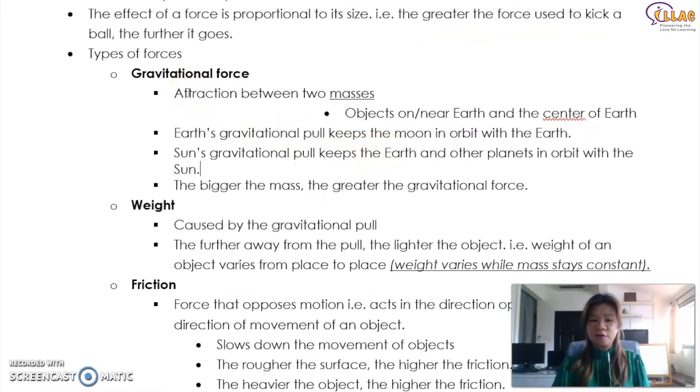There is gravitational force. So attraction between two masses is gravitational force. What are the two masses? It will usually be the objects on or near earth and the center of the earth. So it's not just earth that is pulling you down. There are other things that's pulling other things around as well. For example, the earth's gravitational force keeps the moon in orbit with the earth. What does that mean? Let me show you.